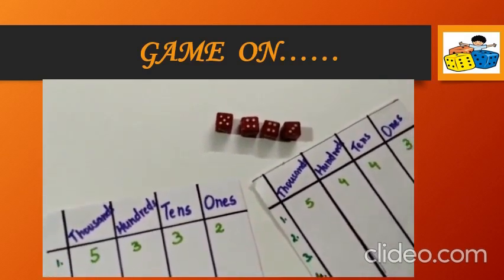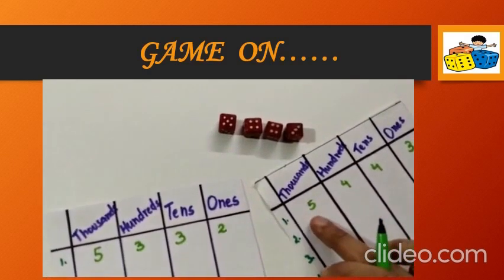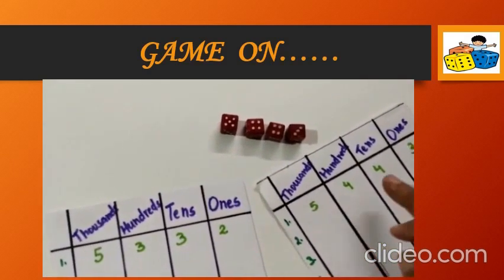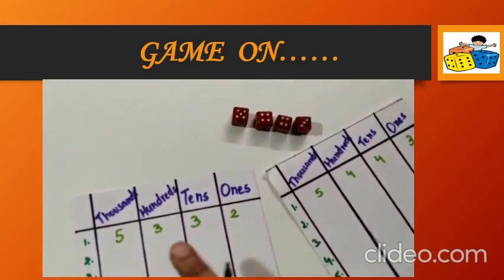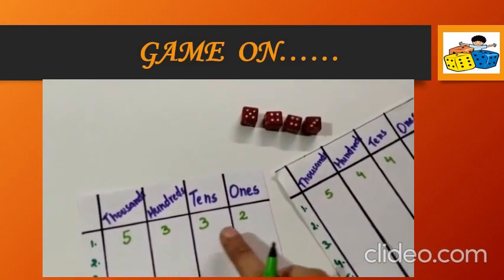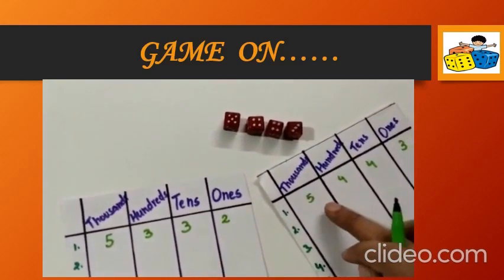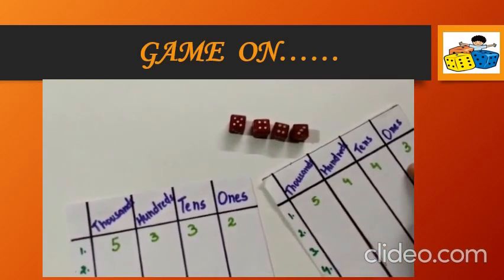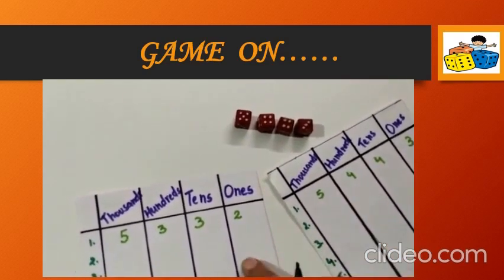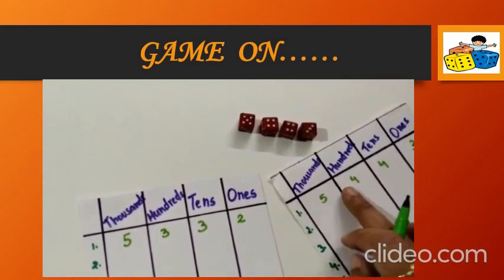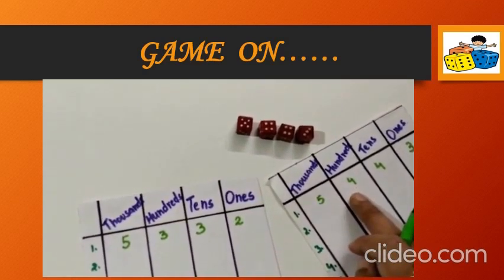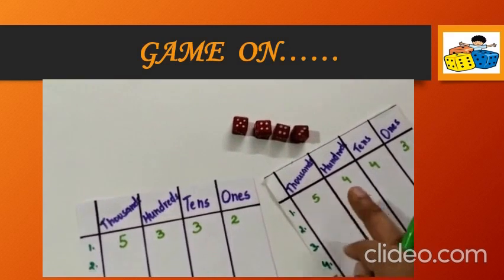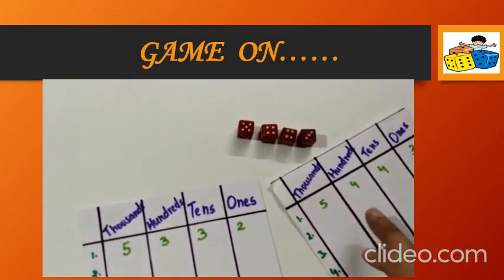So, what is the number that is being formed here? 5,443. So, your number is 5,332 and your partner's number is 5,443. Which number is bigger out of these two? This one. Yes, your partner's. So, who is the winner of this round of the game? Your partner.